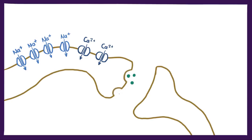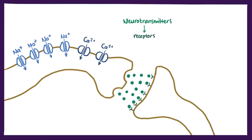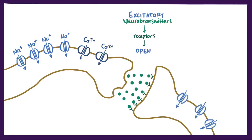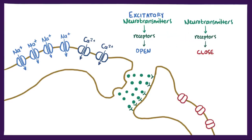The way this ion flow is controlled is through neurotransmitters, a type of signaling molecule, and receptors. Neurotransmitters bind to the receptors and basically tell the cell to either open up the ion channels and relay the electrical message — called excitatory neurotransmitters — or close the ion channels and stop the electrical message, called inhibitory neurotransmitters.